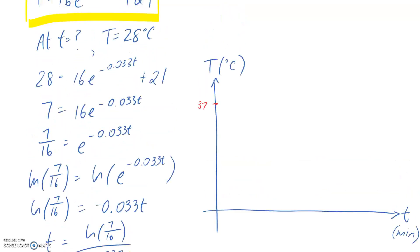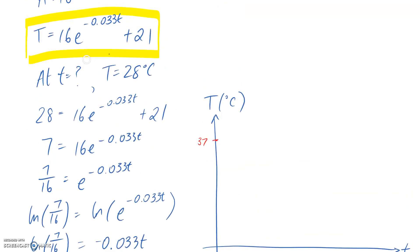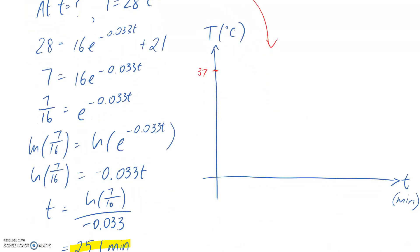So what we would expect is if we plot our unique solution onto the graph, we would be passing through the point 37 at the beginning of time. What we should see as well is that this drops off, and it approaches, as it gets further and further towards t is infinity, the value of our ambient temperature, which was 21 degrees here.